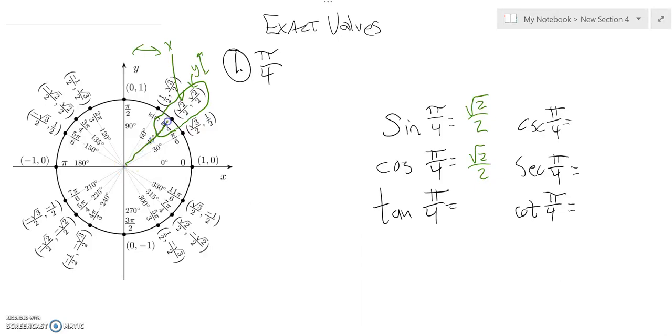So tangent is how steep it is. So tangent is y over x, and since y equals x, the tangent is 1.